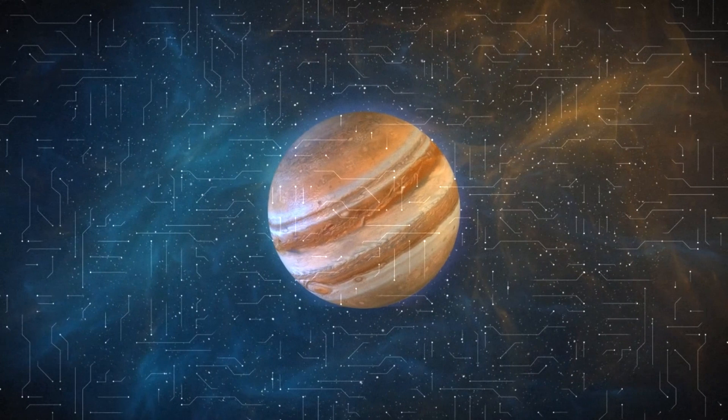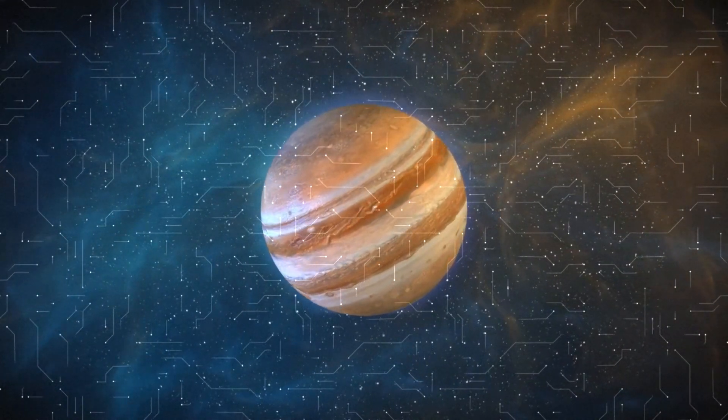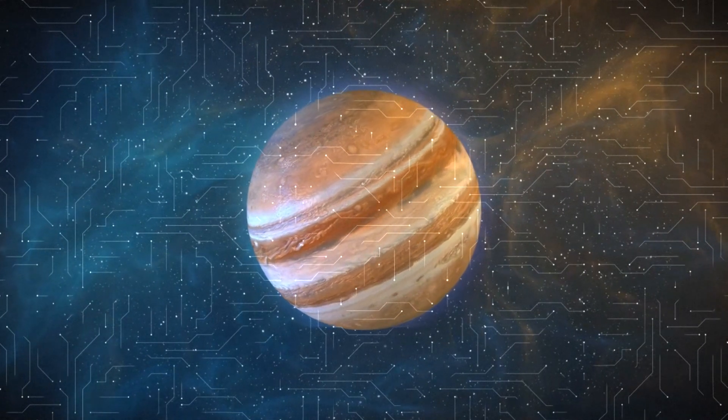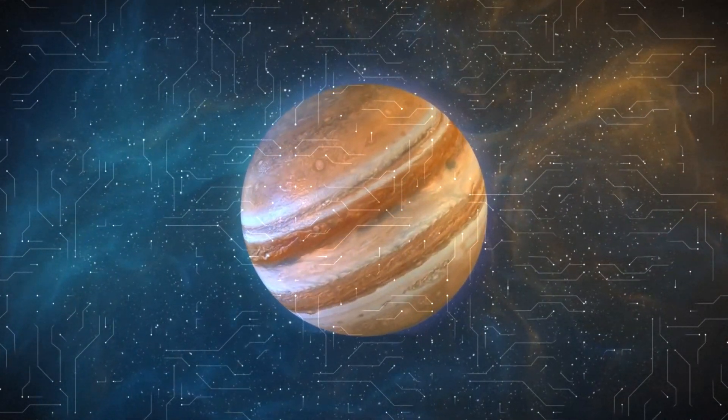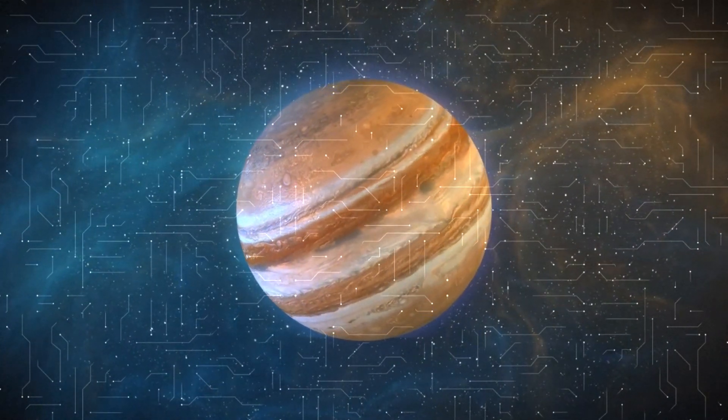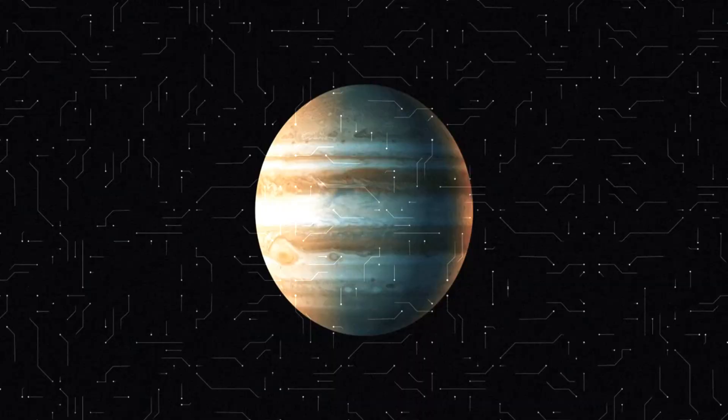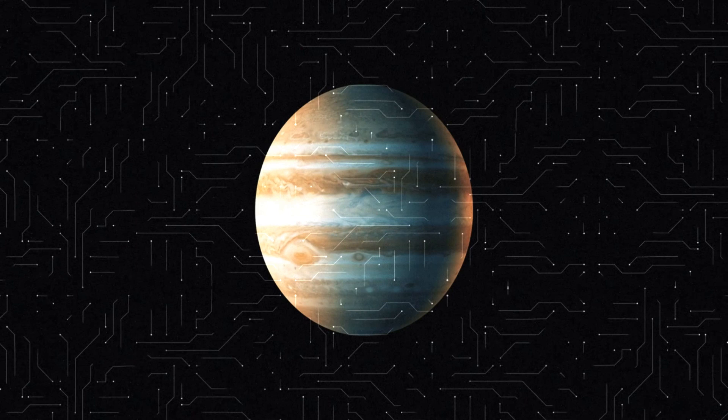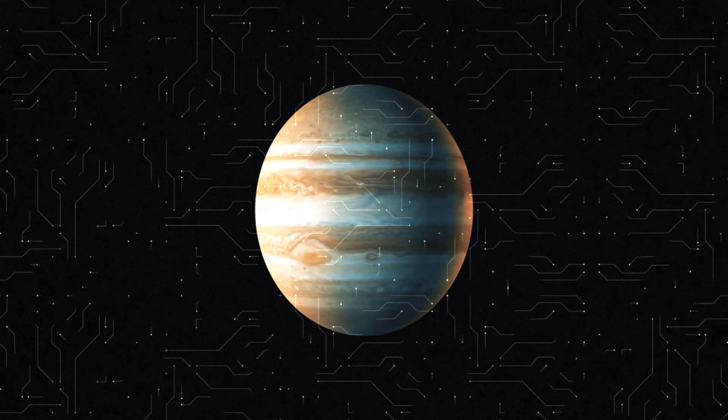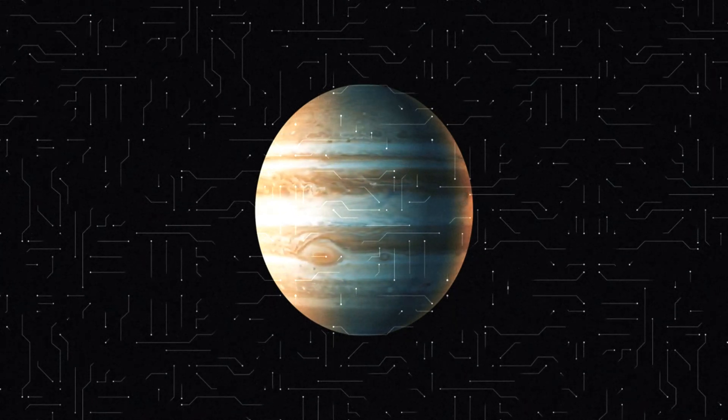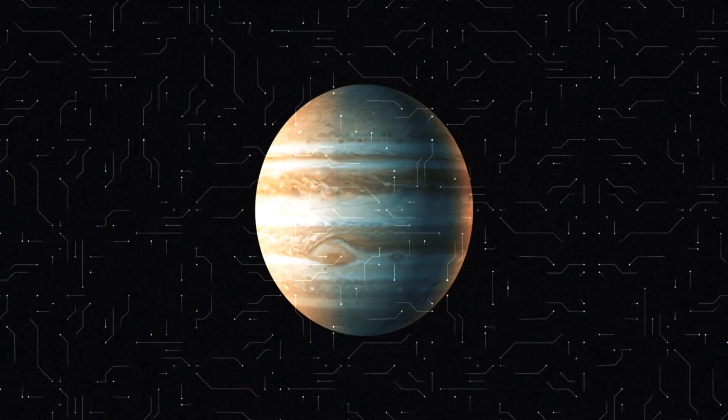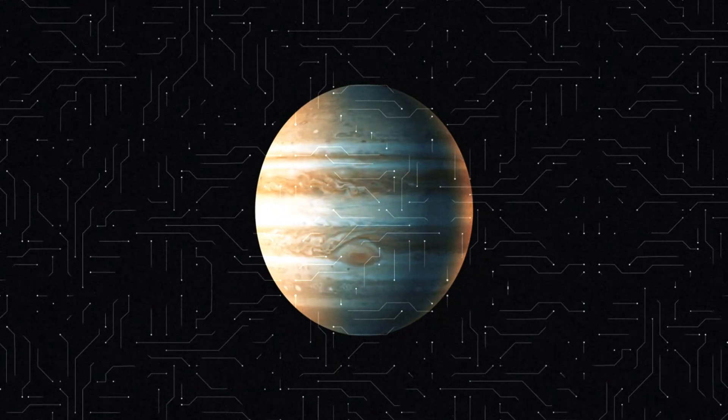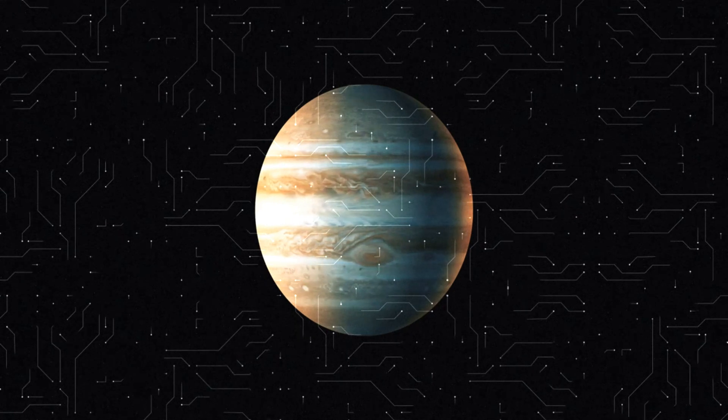7. Uranus. Uranus is the seventh planet from the Sun and is distinguished by its unusual position. Unlike other planets, Uranus rotates on its axis, which is almost lying on its side. It consists mainly of ice and gases such as hydrogen and helium. The distance from Uranus to the Sun is about 2.9 billion kilometers. Interesting fact, Uranus has a system of rings, although they are much thinner and less visible than those of Saturn.